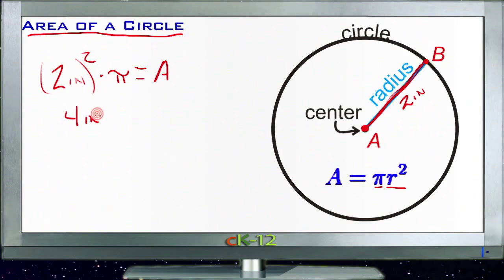Four inches squared times pi—oops, that's not a pi, that's a four. How did that sneak in there? Times pi equals area. So the area of our circle could be written as either 4π square inches, or you could estimate pi.